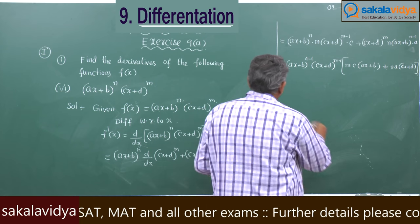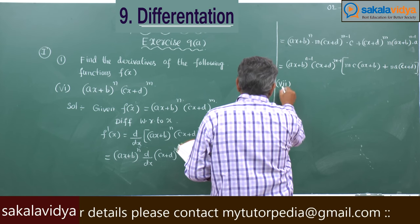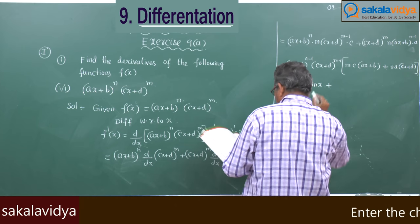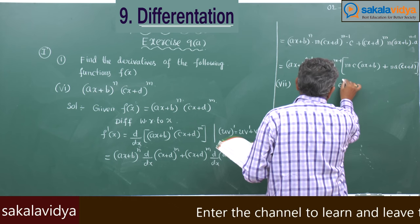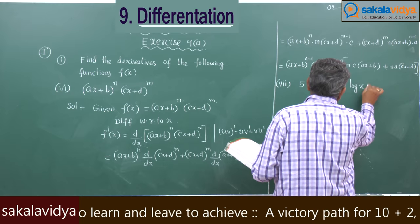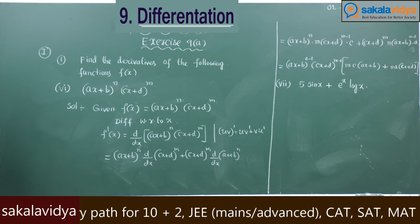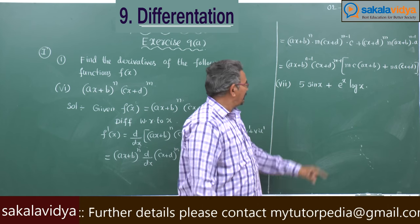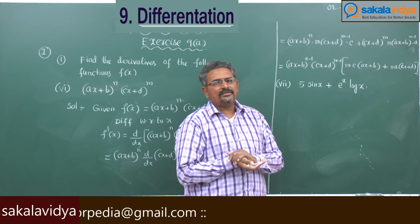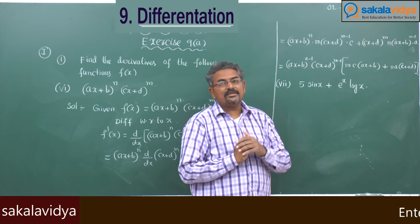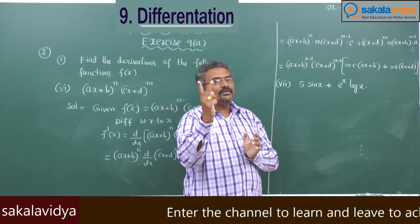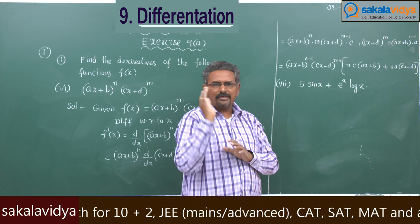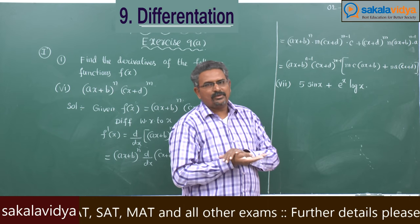What is the seventh problem? It is f(x) = 5·sin(x) + e^x·log(x). The first term can be differentiated very easily. In the second term, we observe a product of two functions. Whenever there is a product of two functions to differentiate, we must apply the UV rule — that is, the product rule.